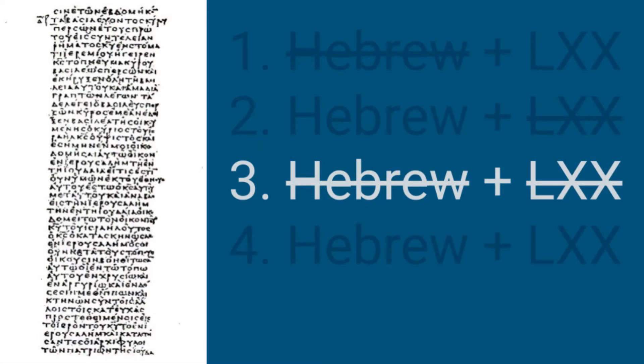The third category is the roughly 10% of quotations that actually do not match either the Septuagint or the Hebrew text — they differ from both. So the question is: where did these texts come from? We don't really know. It could be that there was some manuscript variant — some wording of that particular text no longer preserved — and the New Testament writers quoted from it. It could also be cases where the New Testament writers did not feel the need to strictly follow either text and essentially paraphrased them. We do not know.